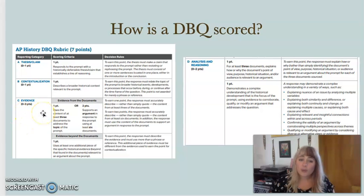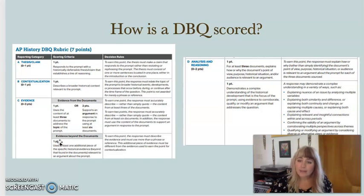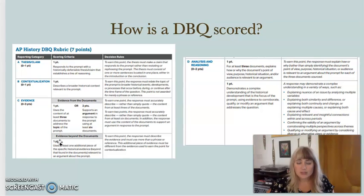For Part C, you can get one point for using three documents or two points for using six — and we are all going for two points, so you're going to use all six documents. You also get one point for evidence beyond the documents, meaning something from your own knowledge: notes you took on the Mongols, your MSCO book, the Crash Course video, or your atlas — basically anything you know about the Mongols that you can work into your argument that does not come from the documents.